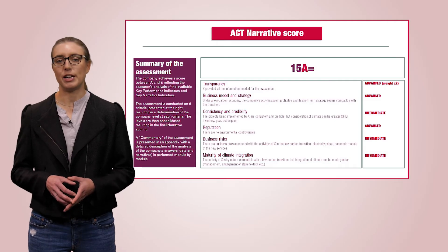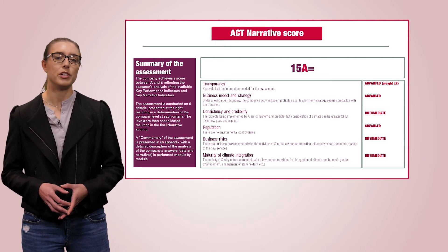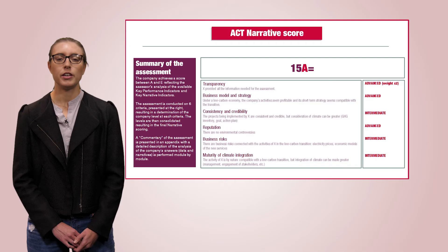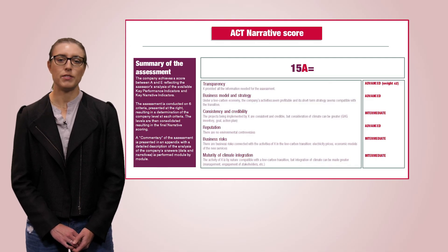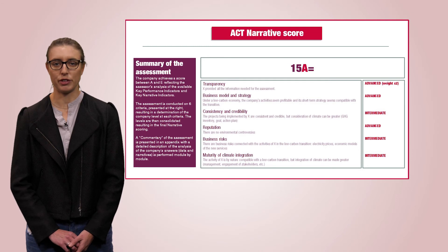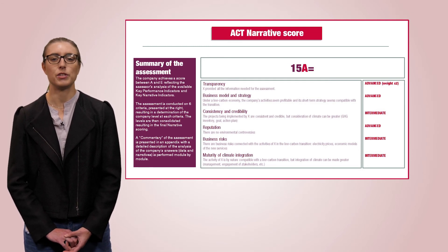A template with feedback on the narrative scoring is also included. Detailed commentary by the assessor is provided on six criteria: Transparency, Business Model and Strategy, Consistency and Credibility, Reputation, Business Risks, and Maturity of Climate Integration. This reports what aspects of the data and information gathered were considered for the narrative score, and also provides relevant feedback for the company, which will have an opportunity to comment on aspects of the feedback report.